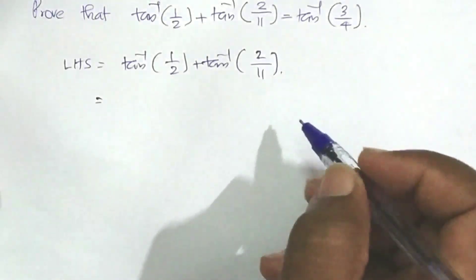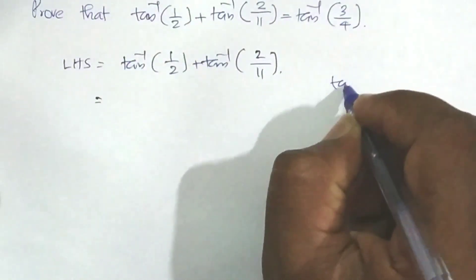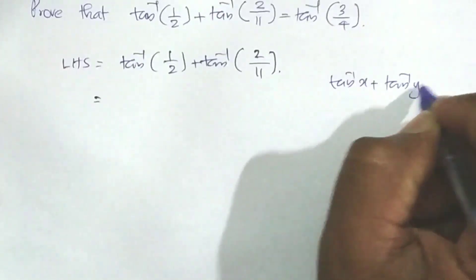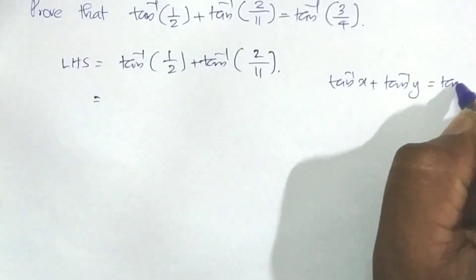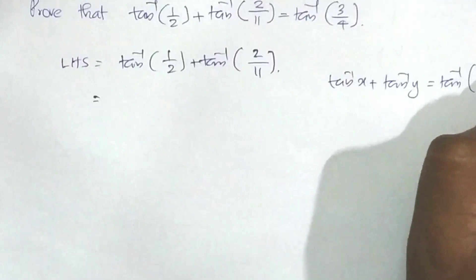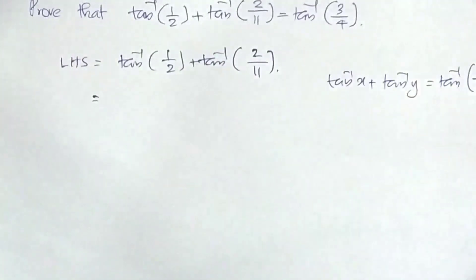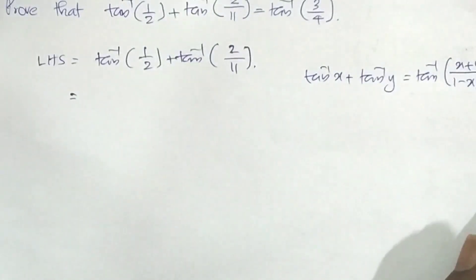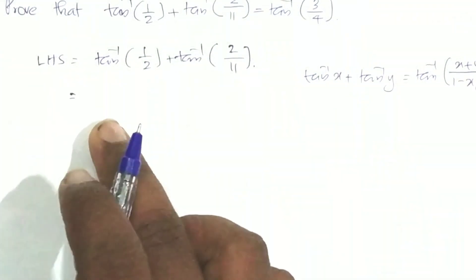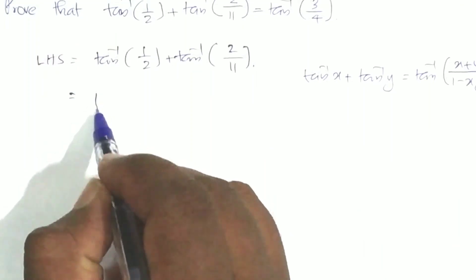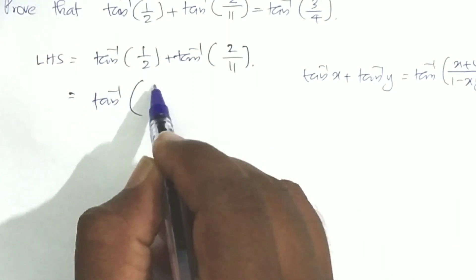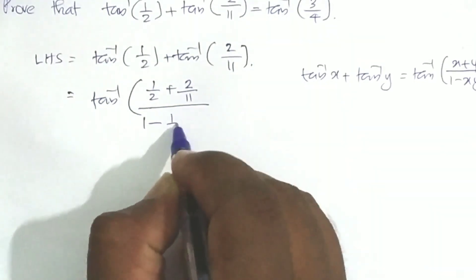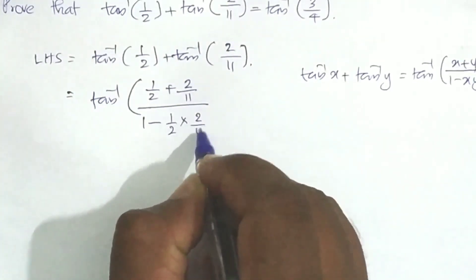We apply the formula: tan inverse x plus tan inverse y equals tan inverse of (x plus y) divided by (1 minus xy). Substituting, that is tan inverse of (1/2 plus 2/11) divided by (1 minus 1/2 into 2/11).